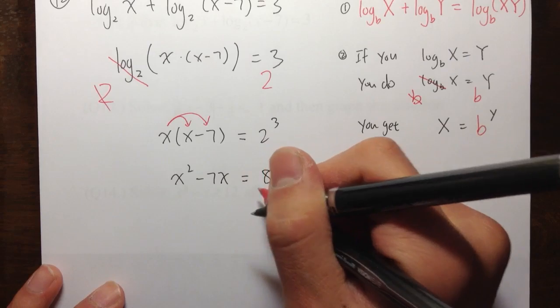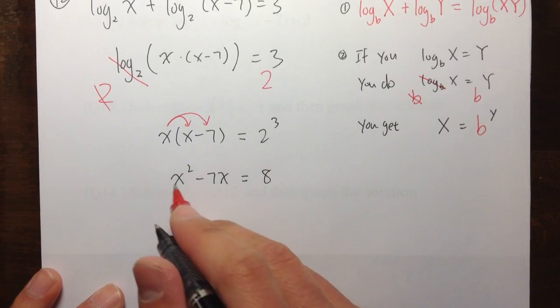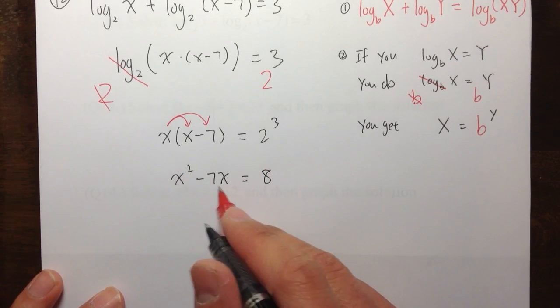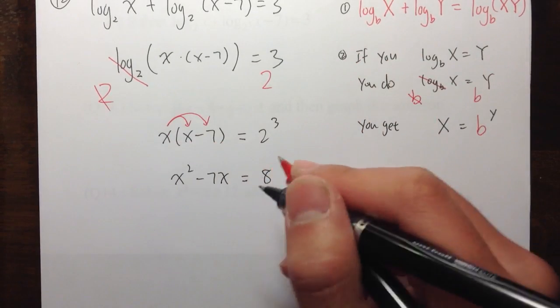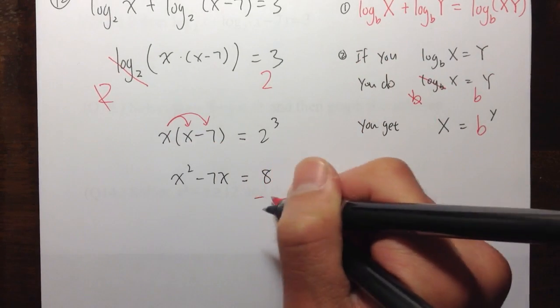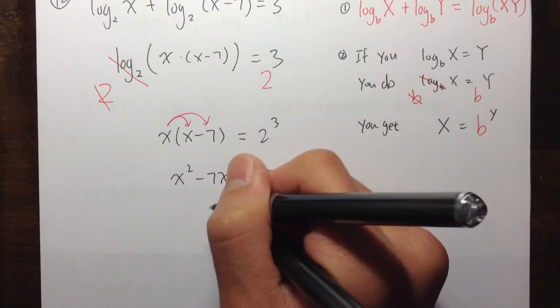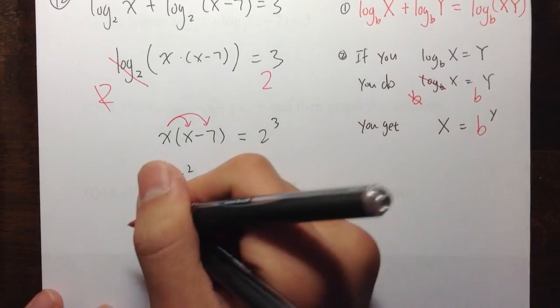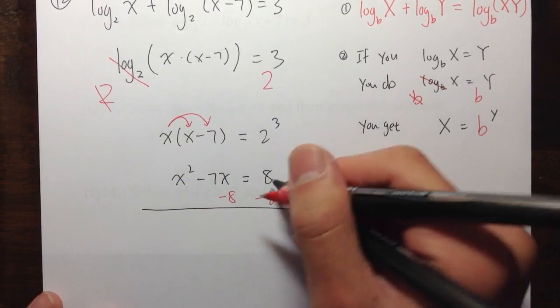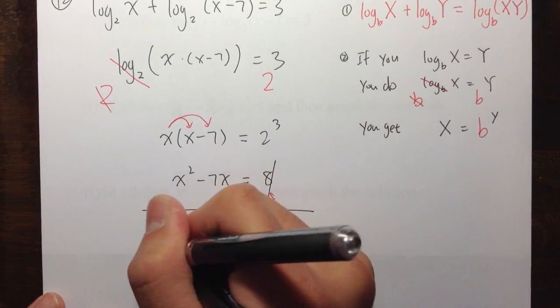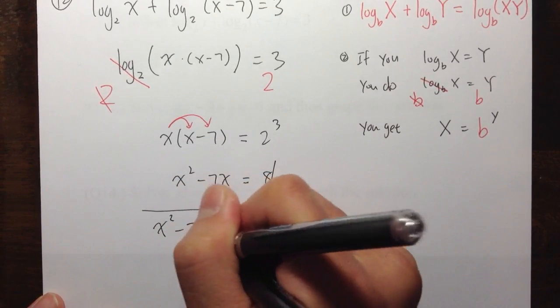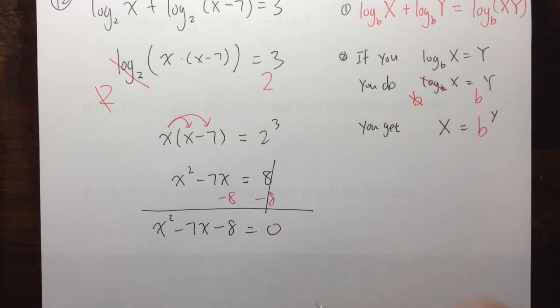Alright, and then this is the quadratic equation because we have X to the second power. And then X. Let's try to make one side equal to 0 and then factor the other. I have the 8 right here. Let me bring the 8 on the left-hand side. So I subtract 8 on both sides. That will be 0. And then on the left-hand side, I get X squared minus 7X minus 8 equals 0.